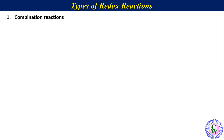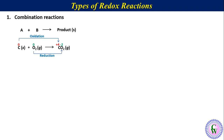Combination reactions. A combination redox reaction can be represented as A plus B equals product, where there may be one or more products. The important thing to note is that either A or B or both must be in elemental form. All combustion reactions are combination reactions. For example, elemental carbon reacting completely with oxygen produces carbon dioxide. Here, carbon undergoes oxidation while oxygen undergoes reduction, and both reactants are in elemental form.